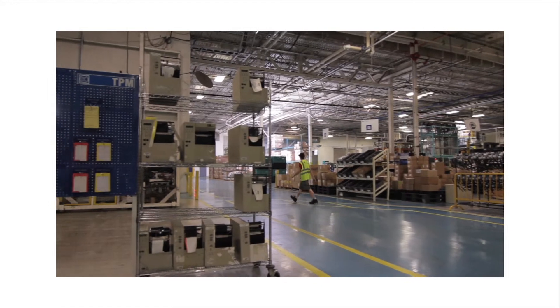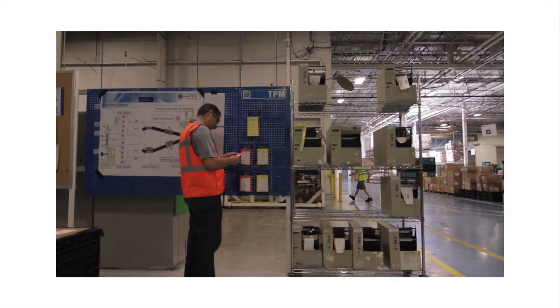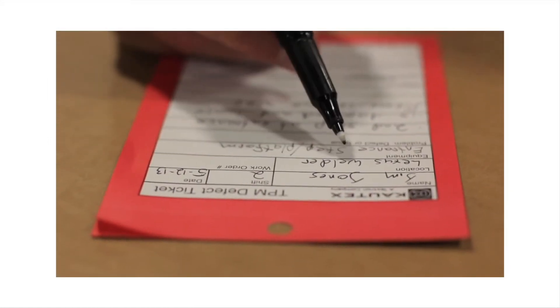Here's how it works. The TPM system has two cards or tickets. Yellow for maintenance and red tickets for safety.